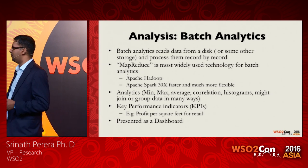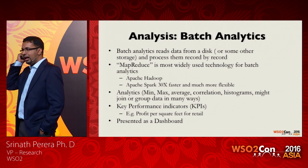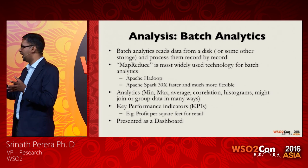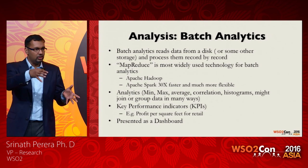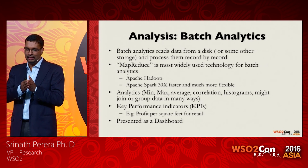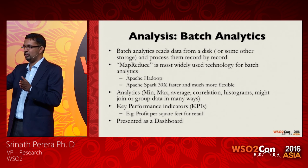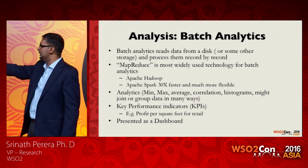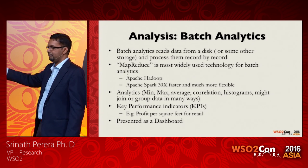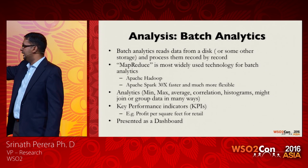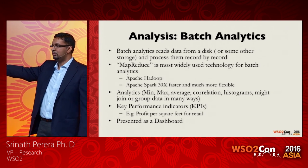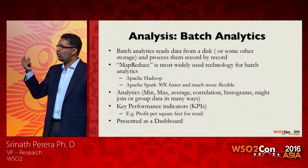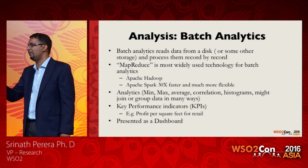Now we have the data, so we go to the analysis part. With batch analytics, the idea is you take data from disk, do some processing, and write to another disk. Because the data comes from disk, processing can take from a few minutes to a few hours depending on how much data you have — but it is very scalable. Examples of what you do with this are things like minimum, maximum, average, correlation. The results are called KPIs — Key Performance Indicators — numbers that give you a high-level understanding of how your business is doing.